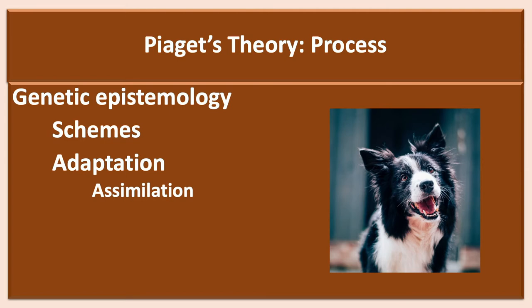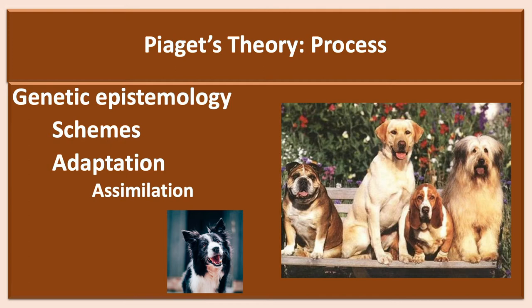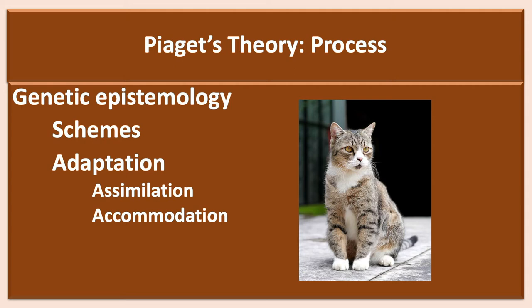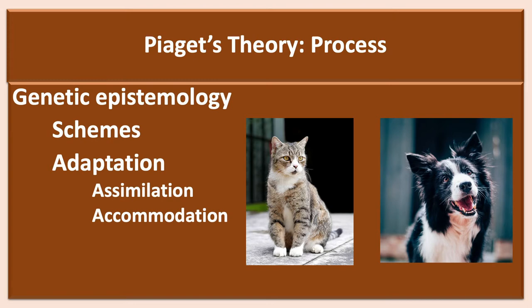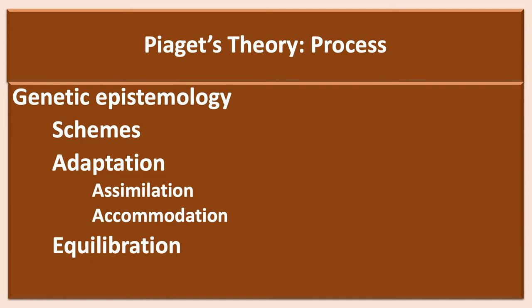This is done using two compatible processes. The first is labeled assimilation. For example, children might form a schema of a dog as a result of seeing and interacting with one. Later, the child is able to assimilate — or bring into schema — a wide variety of examples of dogs, although they may differ in multiple characteristics. The second process is labeled accommodation. In this case, the child might see a cat and attach the label dog to it. However, the parent provides feedback that this is a different animal, labeled cat. The child then creates a new category of cat and begins assimilating other examples into this new scheme.